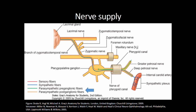Parasympathetic supply, which triggers lacrimation, originates in the lacrimal nucleus in the pons. From there, pre-ganglionic fibres travel with the nervus intermedius to the greater petrosal nerve, and then through the vidian nerve to the pterygopalatine ganglion. There they synapse, and the post-ganglionic fibres join the maxillary nerve, passing through its zygomatic branch and then the zygomaticotemporal nerve to reach the lacrimal nerve.